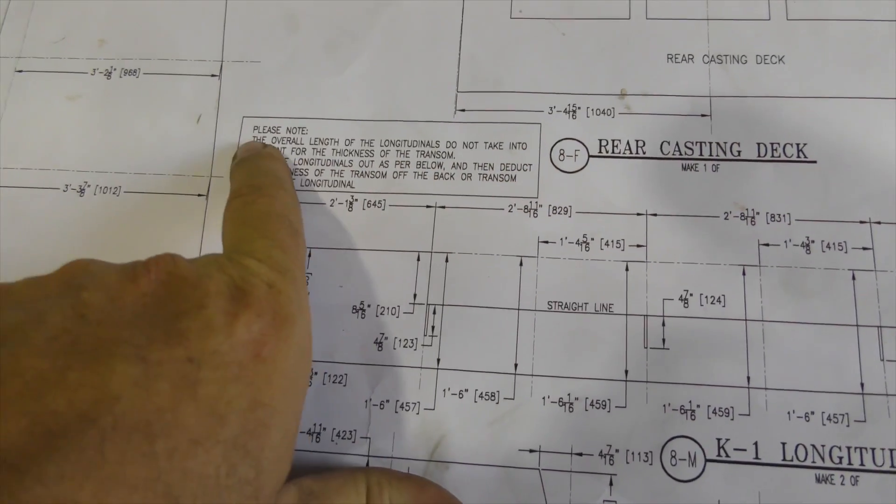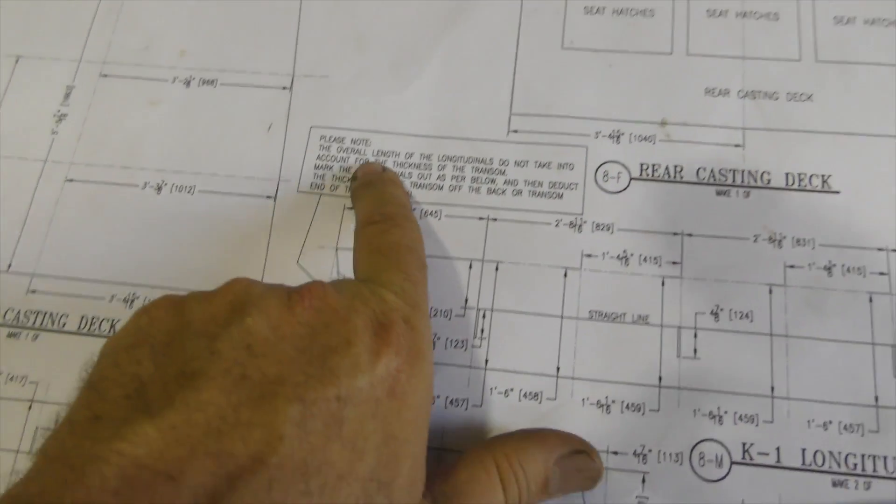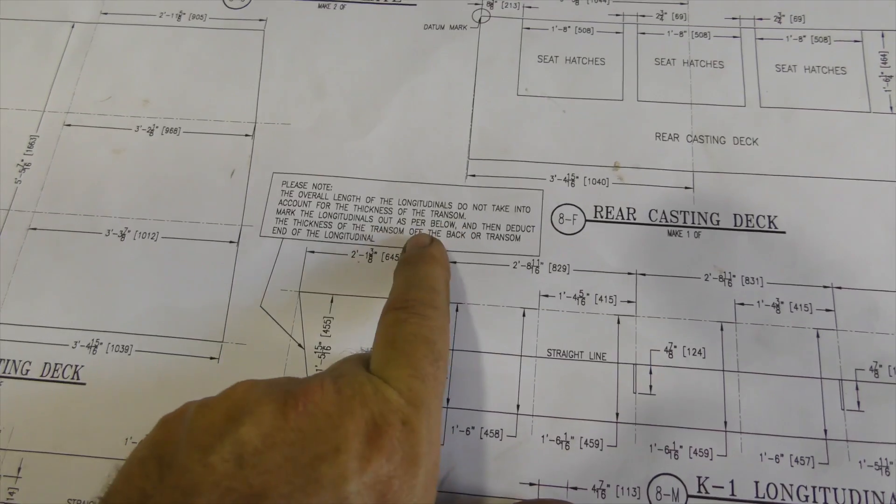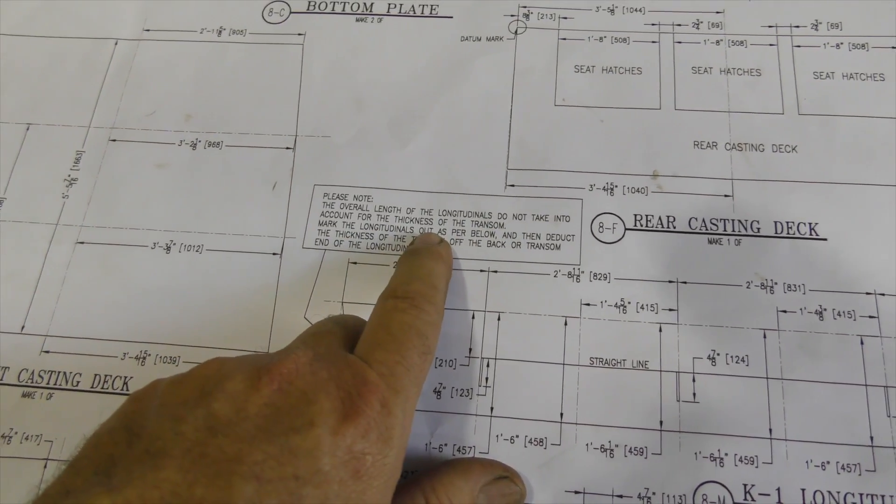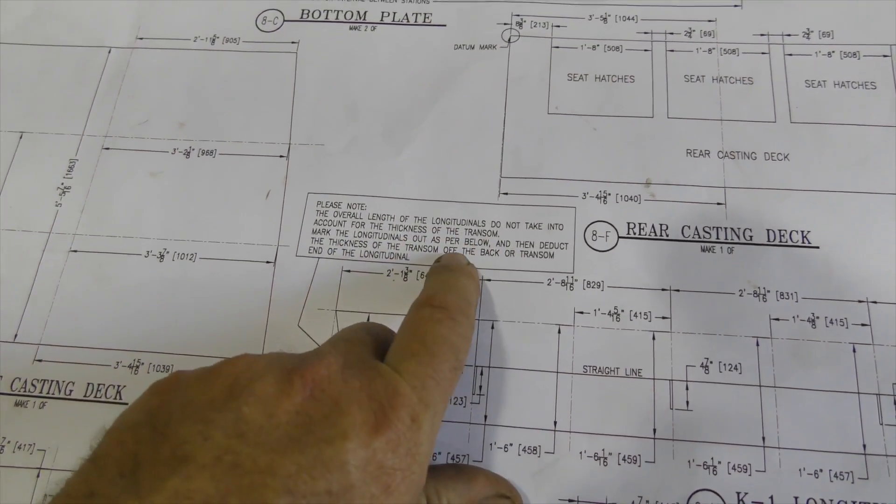What it does say here though, is that the overall length of this longitudinal doesn't take into account the thickness of the transom, which I presume means, you know, you can make it whatever thickness you want, but make sure you take it off.